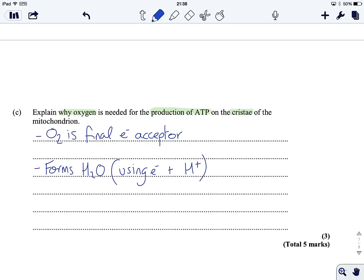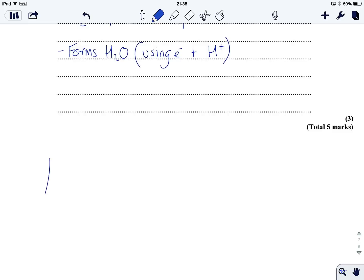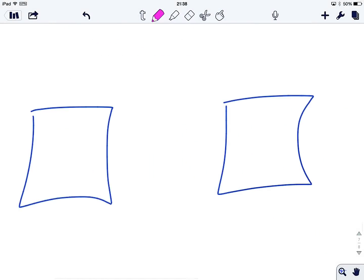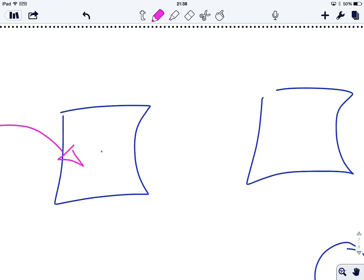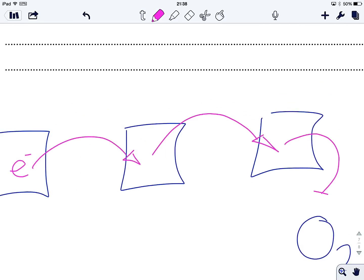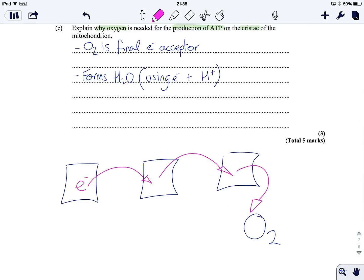So if I draw out some carrier proteins down here, these are my electron carrier proteins. Down here is oxygen. Now, my electrons, they pass along from carrier protein to carrier protein. They jump, in turn, reducing each one. Then finally, they form water with oxygen and some of the protons that have been transported through ATP synthase.